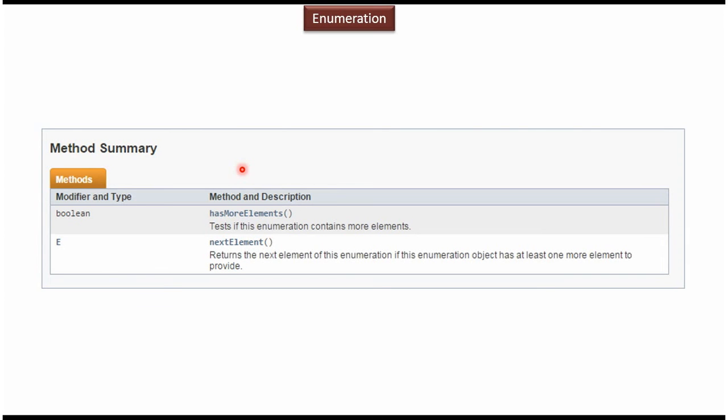Enumeration supports two methods. The first method is hashMoreElements, and the next method is nextElement. This is about enumeration introduction. Thanks for watching.